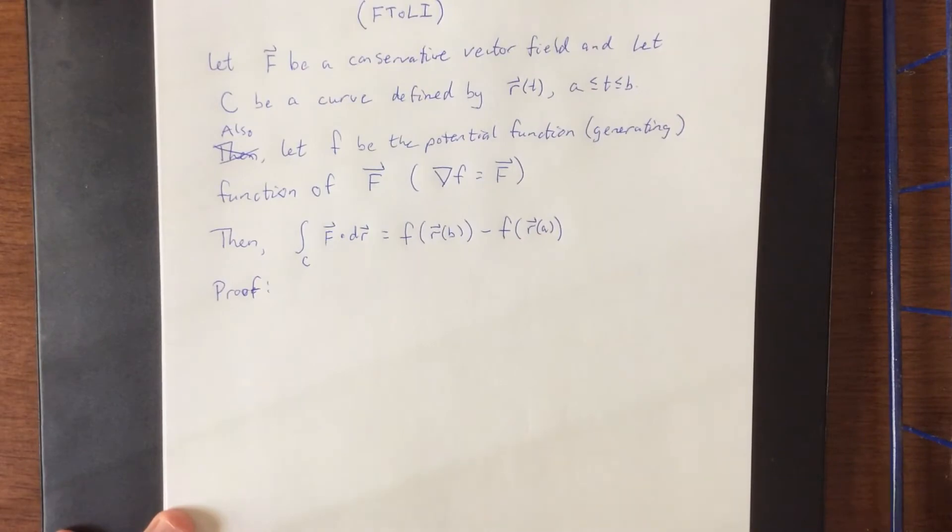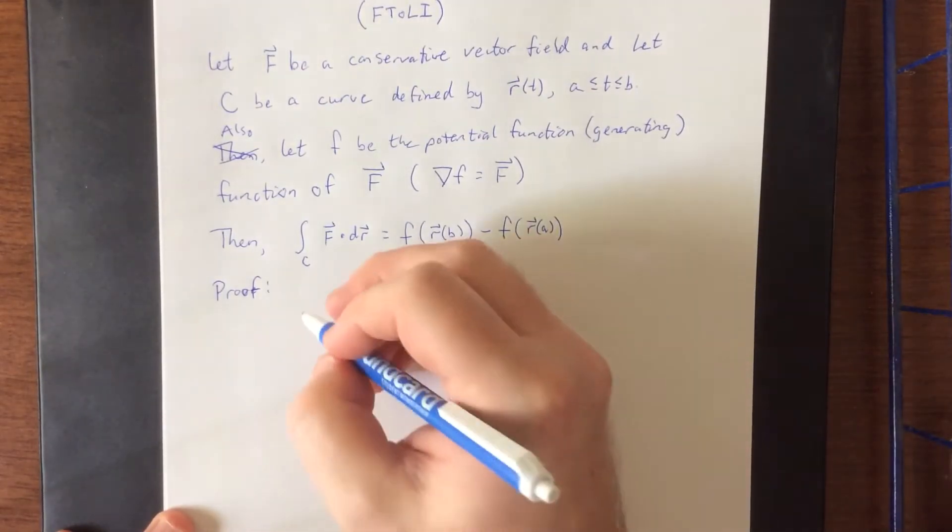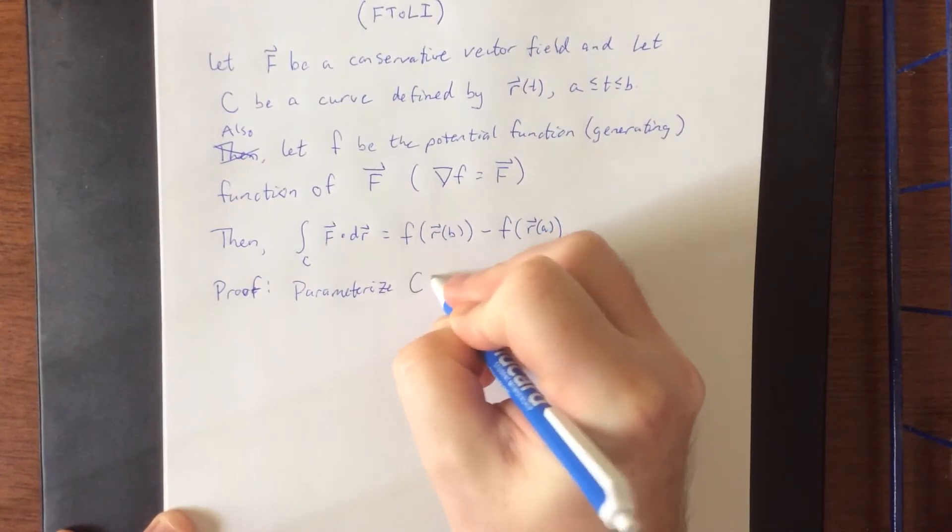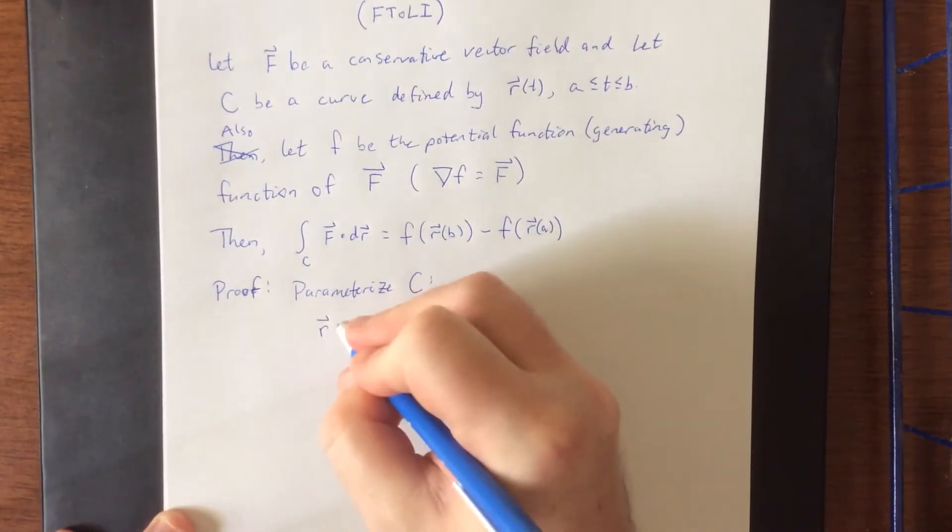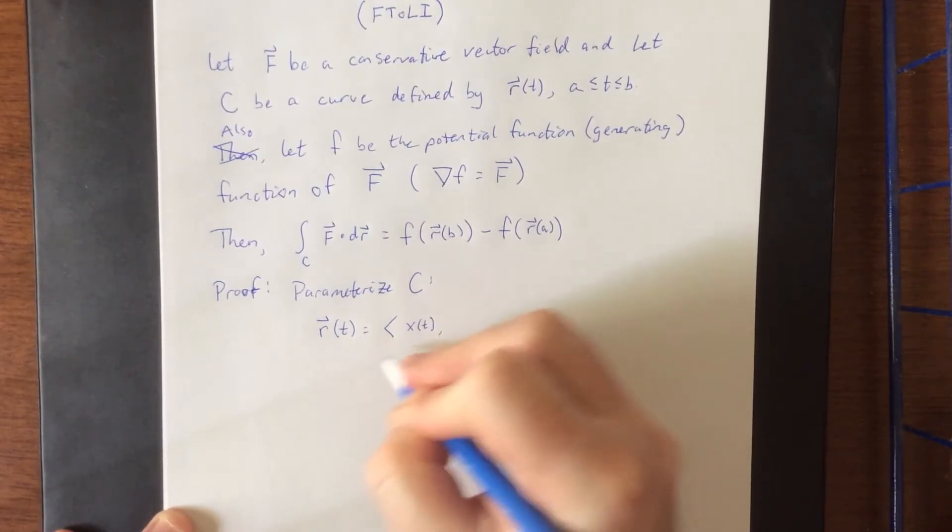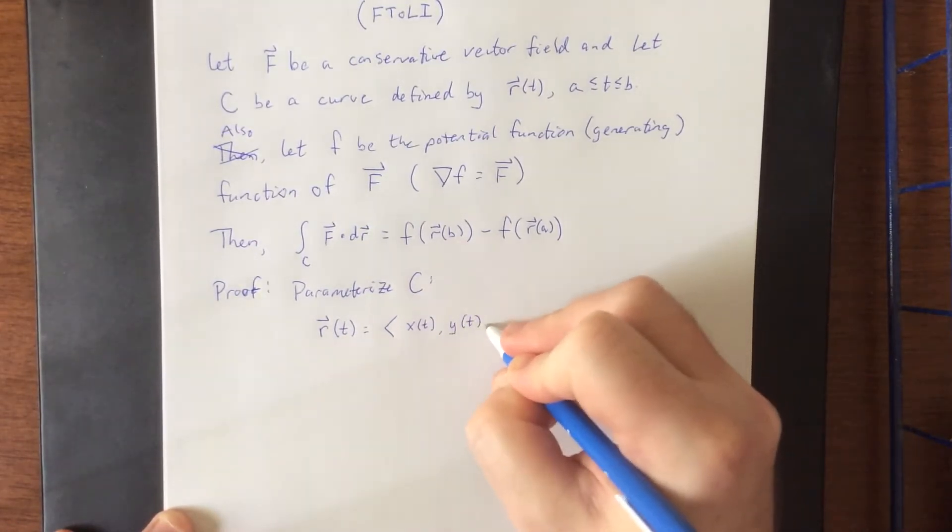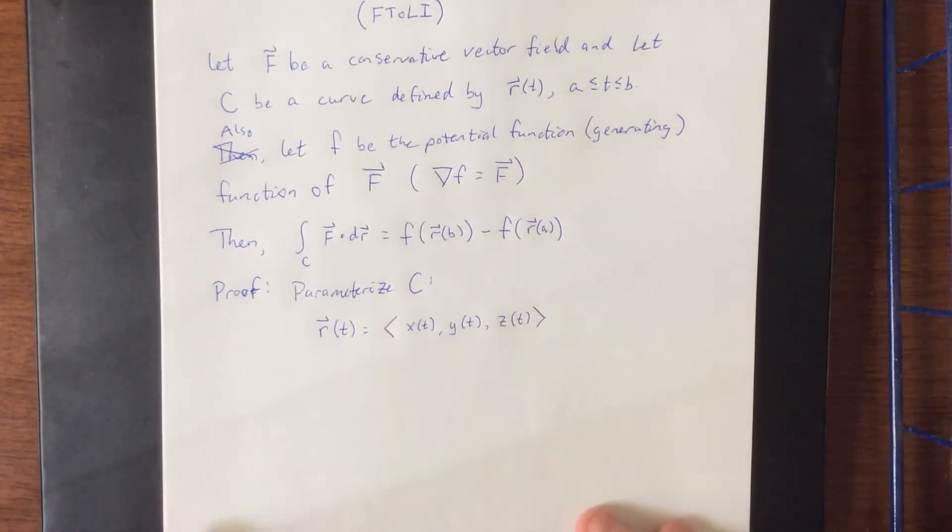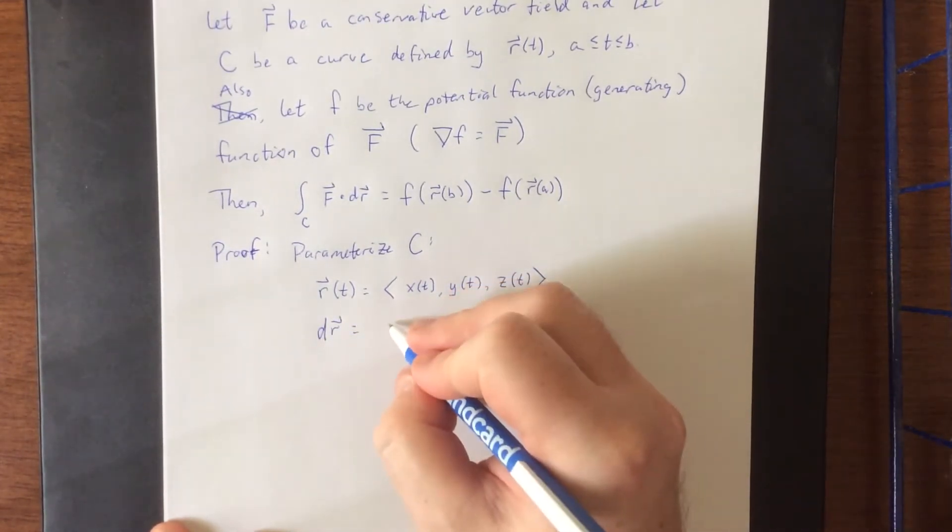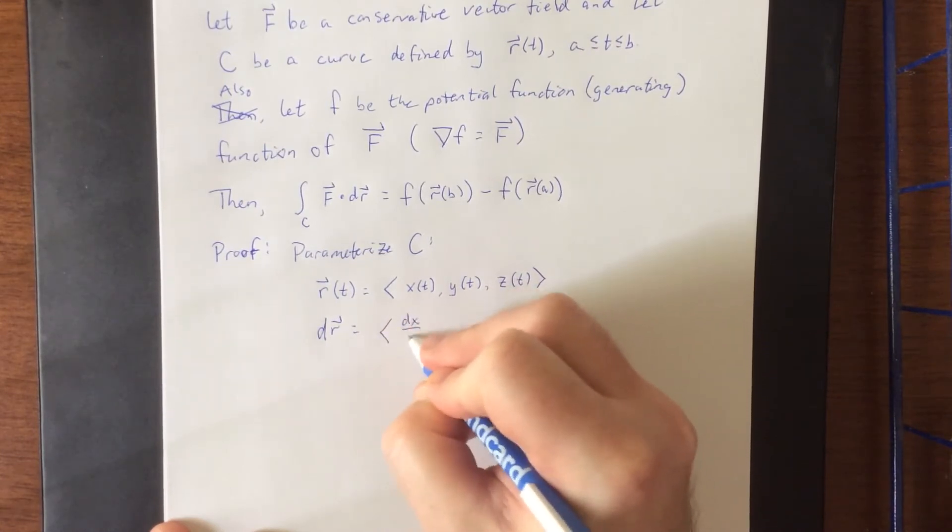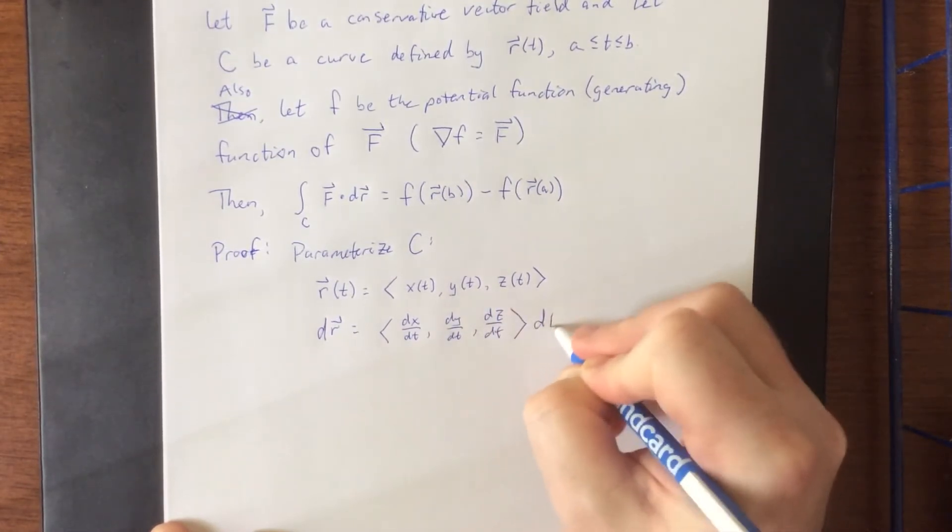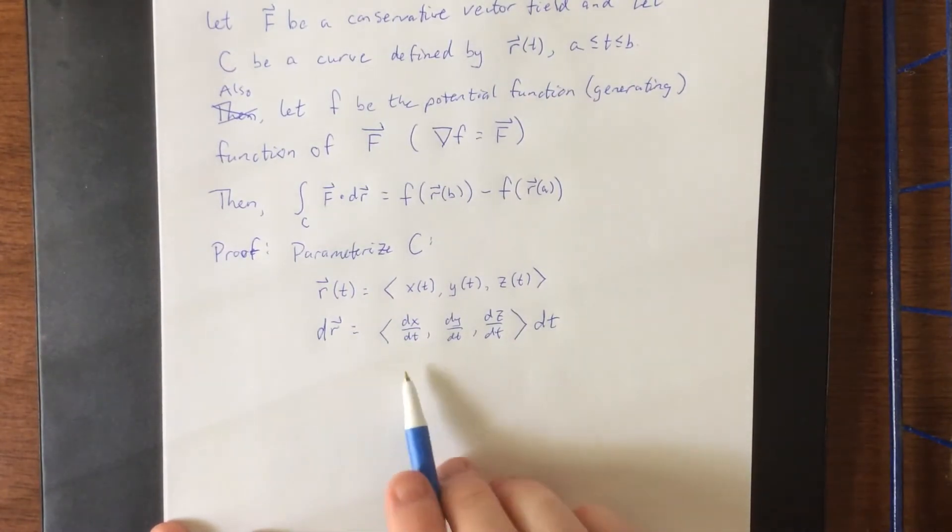All right. So the proof of the Fundamental Theorem of Line Integrals actually stems from what we did in the last section, which is parameterize the curve C. What we'll do is we'll assume that this is working in three dimensions for the time being, though it does go back to two dimensions pretty nicely. So let's suppose that R of T is parameterized by X of T, Y of T, and Z of T. Then DR would be equal to the derivative of each of these with respect to T. We'll call this DXDT, DYDT, and DZDT, DT.